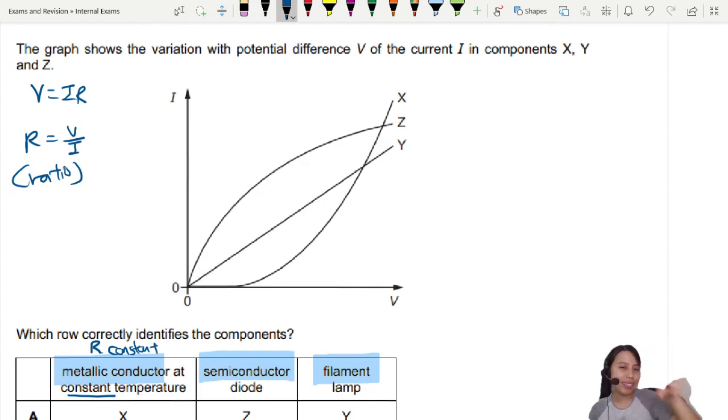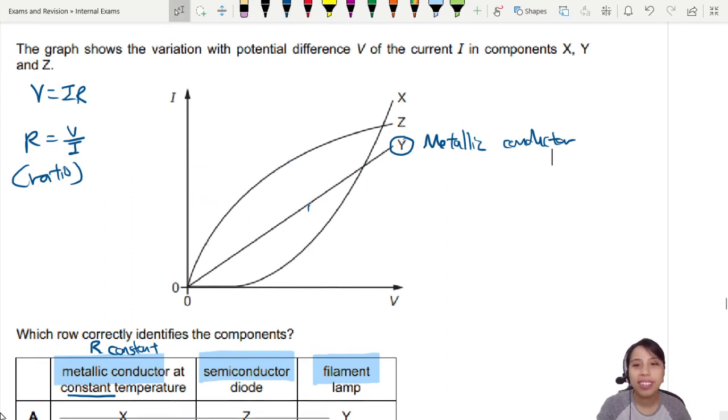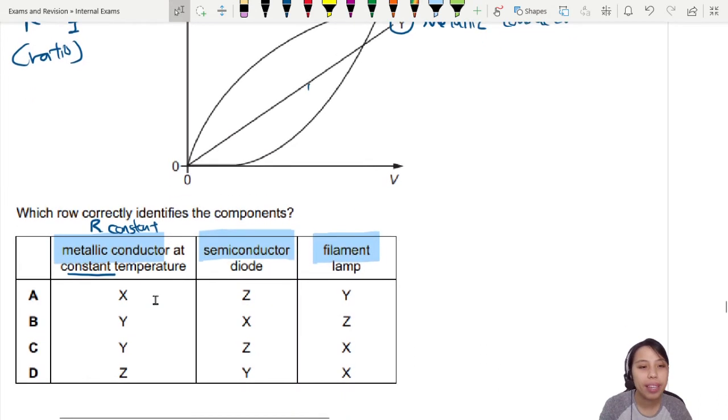So I think the first one is a bit easier to see. Which one is constant all the way? V over I? This one is a metallic conductor. Also known as conductors that obey Ohm's law VIR. So we can cancel out some answers right? Metallic conductor is Y. That gives us a better chance of hitting the right answer at the end. So that's the first one.